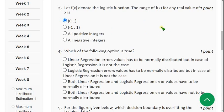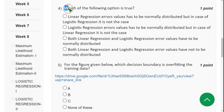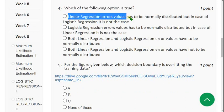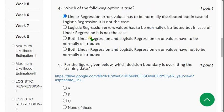Moving on to the fourth question. Which of the following option is true? They have given four options and they are asking which of the following is true. For fourth question, the probable answer is first option: Linear regression error values has to be normally distributed but in case of logistic regression it is not the case. That means it is not normally distributed. So mark first option as the probable one.